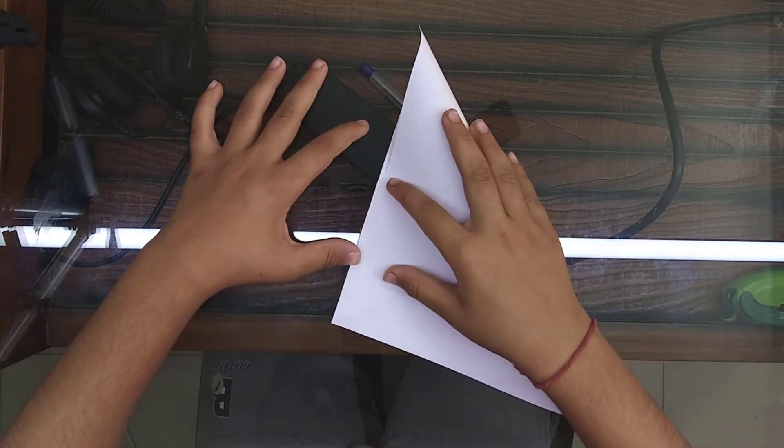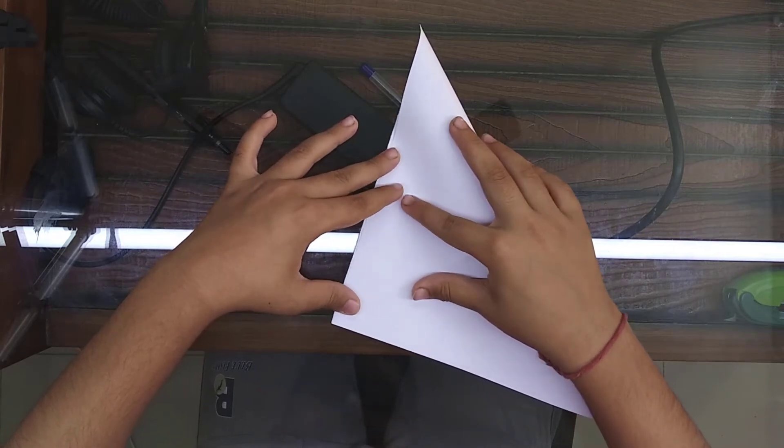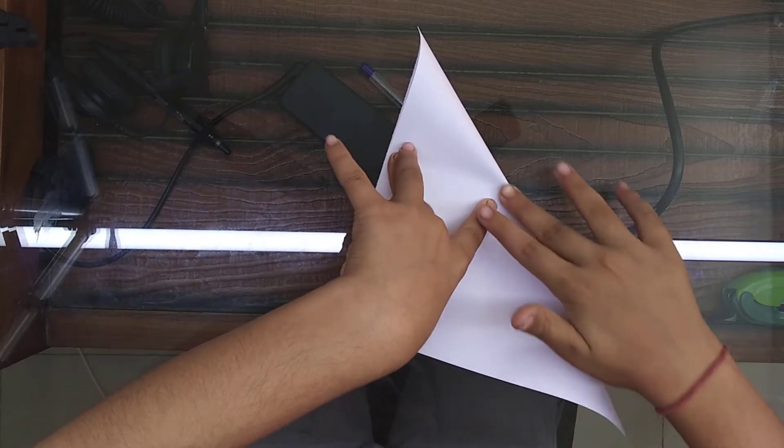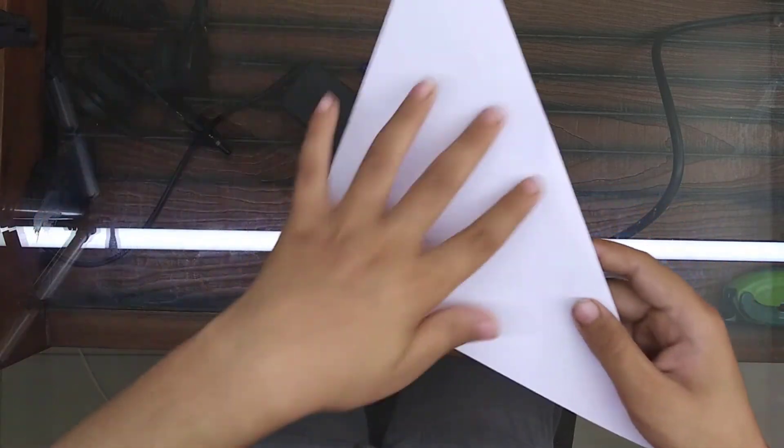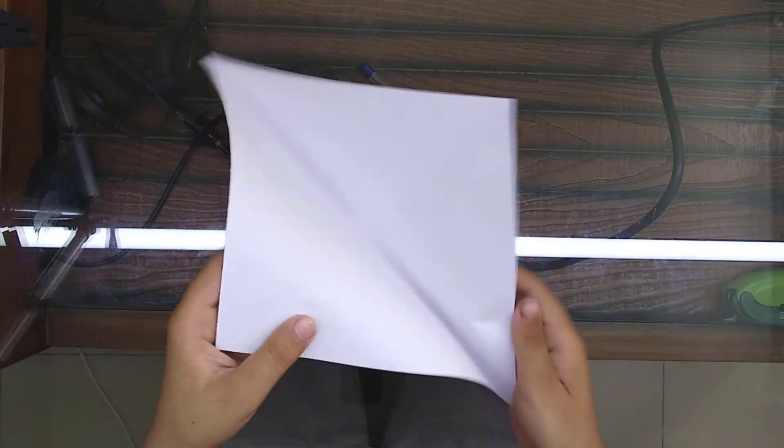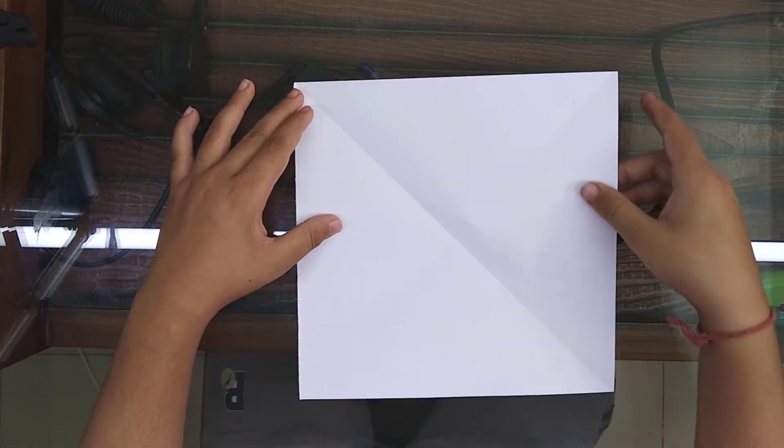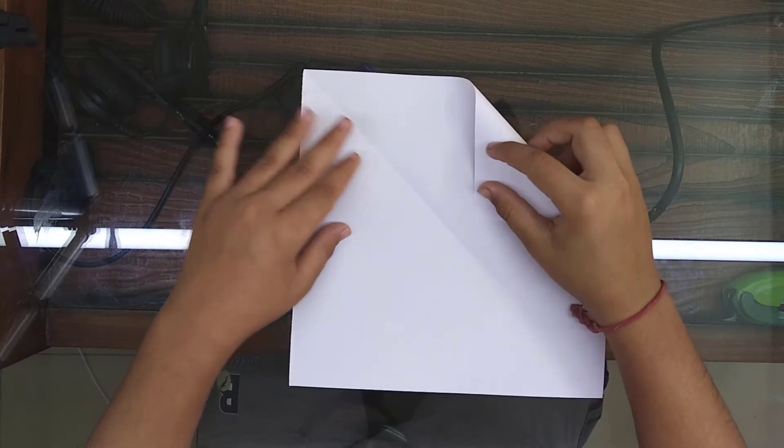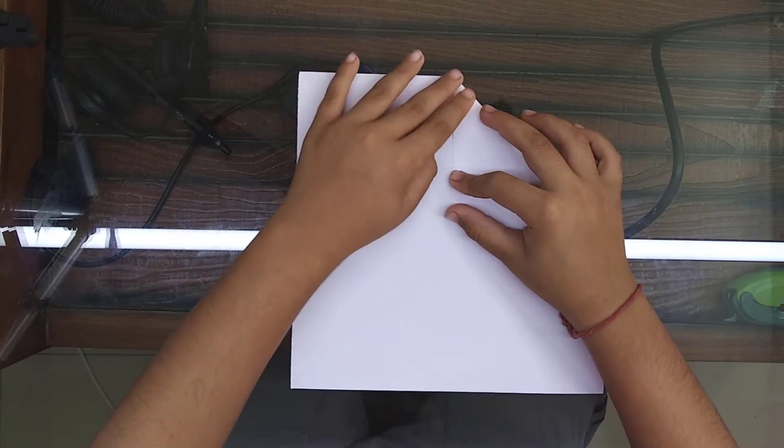And you should have a result like this. There's a line in between. And now open it and press it. Now you will have two lines. Now take this and put it here, right to the center, right to the center. See?